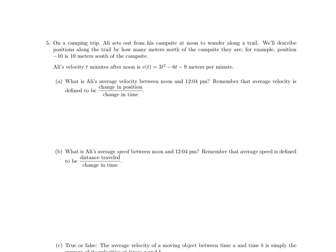The problem states that Ali is on a camping trip, and he sets out from his campsite at noon to wander along a trail. We'll describe positions along the trail by how many meters north of the campsite they are. For example, position negative 10 is 10 meters south of the campsite. So what's interesting is that position has a sign on it. It's not the total distance he's traveled, it's his position relative to the campsite. And so Ali's velocity, t minutes after noon, is v of t, and we're given this polynomial function 3t squared minus 6t minus 9 meters per minute.